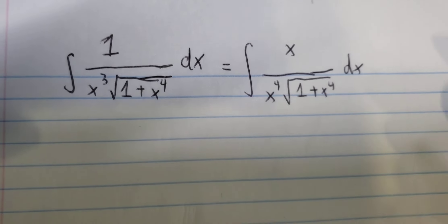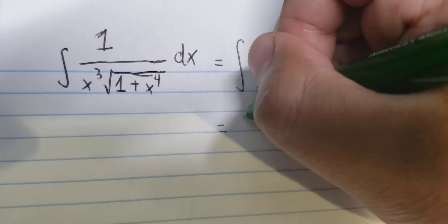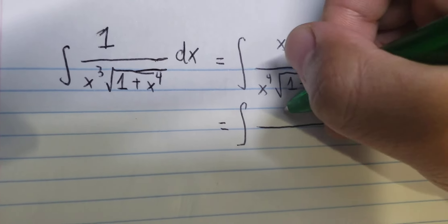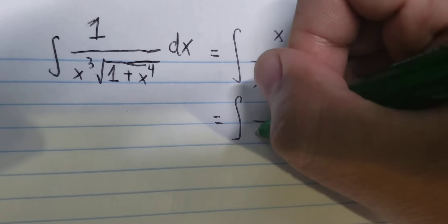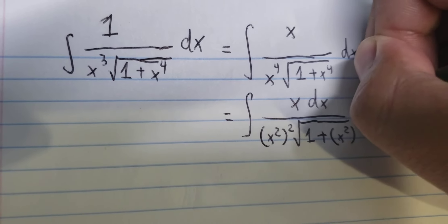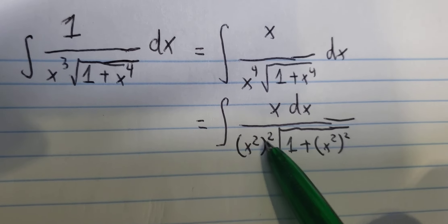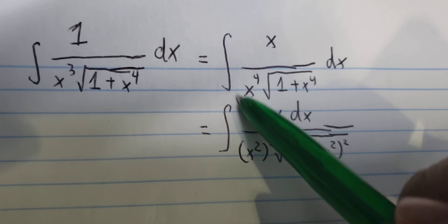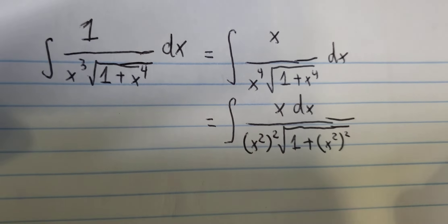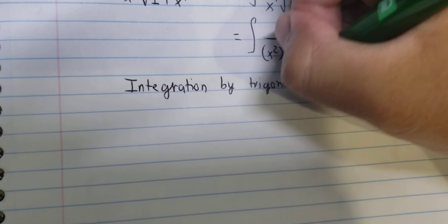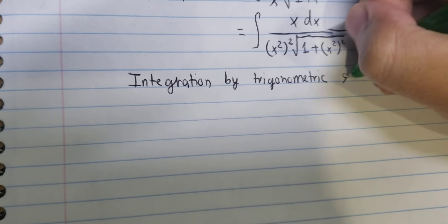So after we have this one we can put it like this, because number two with the power number two — that is about x to the power of number four.